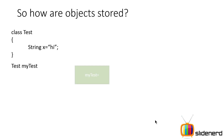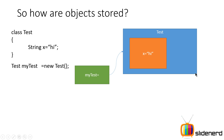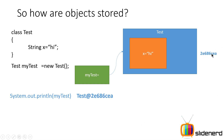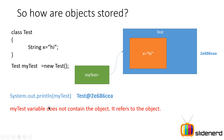Let's look again at the example where we say test myTest. When you say 'test myTest', a reference variable is created. When you say '= new test()', the actual object is created at a different place — it contains the string x = 'hi'. When you print myTest using System.out.println, it prints test@2e686ce8. That number, 2e686ce8, is what is contained inside the reference variable — it represents the address where the actual object block is stored.